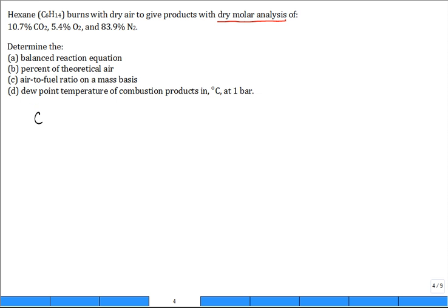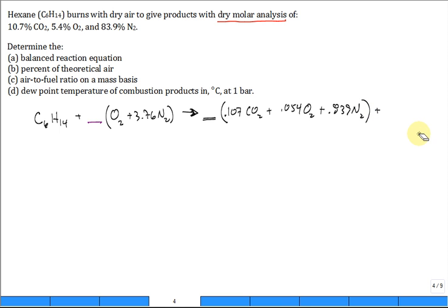Start with the hexane C6H14, and we're going to get the oxygen from air. We leave a space in front, and we're going to be determining that stoichiometric coefficient. The reactants are on the left-hand side and the products on the right-hand side. From the dry molar analysis, we know that it's 0.107 CO2, and 0.054 O2, and 0.839 N2, multiplied by some unknown coefficient. That gives me the right proportion of the dry molar analysis. And then, what was not accounted for is how much H2O.